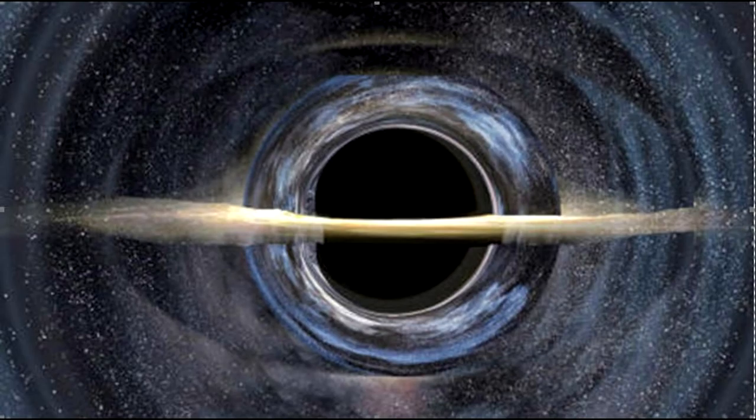If the disk were not gravitationally lensed, the black hole should have looked like this.